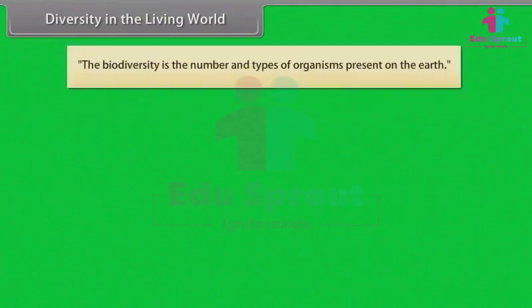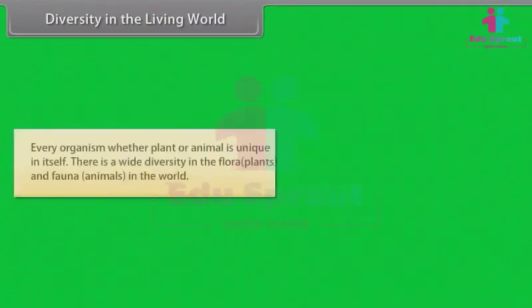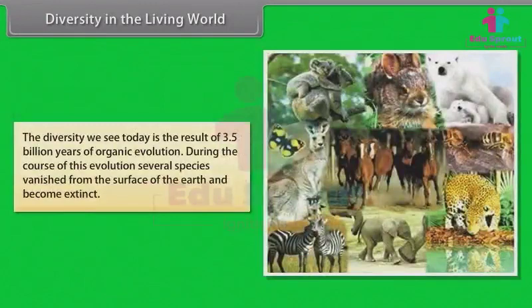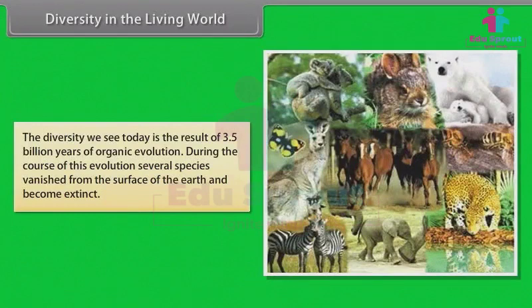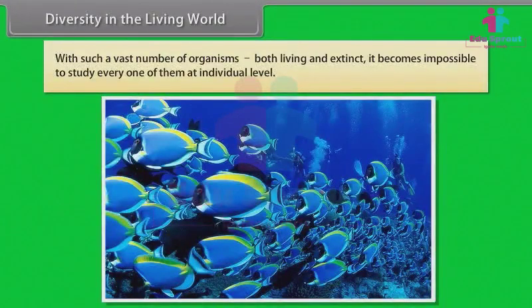The biodiversity is the number and types of organisms present on the earth. Every organism, whether plant or animal, is unique in itself. There is a wide diversity in the flora, plants, and fauna, animals, in the world. The diversity we see today is the result of 3.5 billion years of organic evolution. During the course of this evolution, several species vanished from the surface of the earth and became extinct. With such a vast number of organisms, both living and extinct, it becomes impossible to study every one of them at individual level.